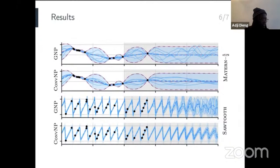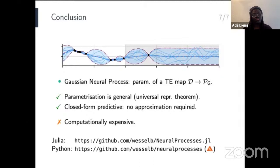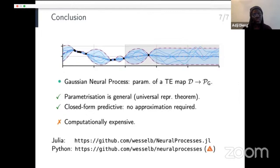To wrap up: we have presented the Gaussian Neural Process, a parametrization of the translation-equivariant map from datasets to Gaussian processes. An advantage is that its parametrization is fully general, following from a universal representation theorem. Another advantage is that the GNP models correlations in the predictive without sacrificing tractability. The disadvantage is that the kernel architecture is computationally expensive — the bottleneck is running the large 2D CNN on massive images — but we are working on this. We provide an implementation within the Neural Processes structure, a Julia framework offering composable building blocks to easily construct existing or new neural processes, with a Python version in development.